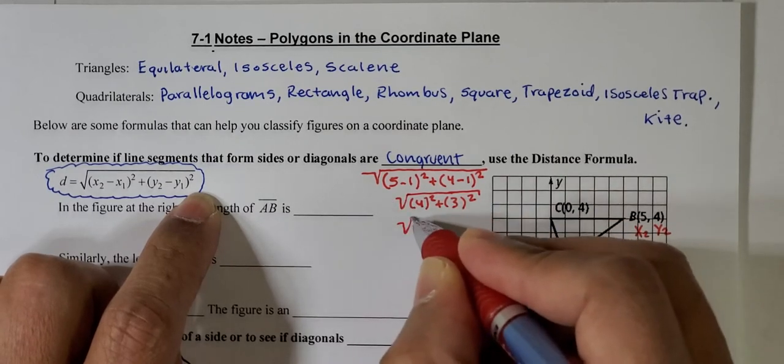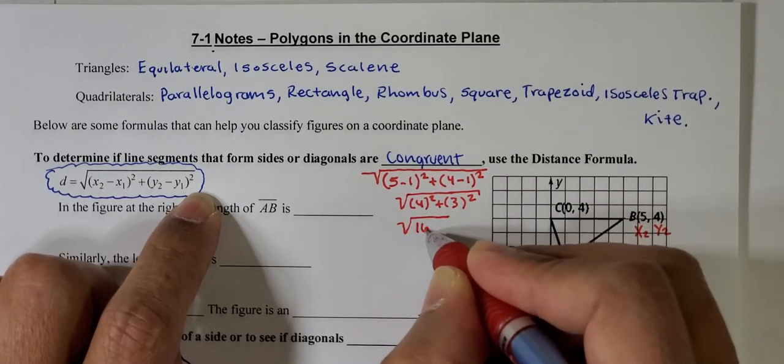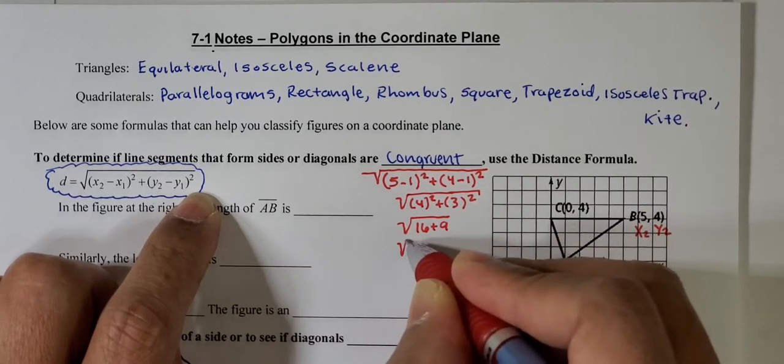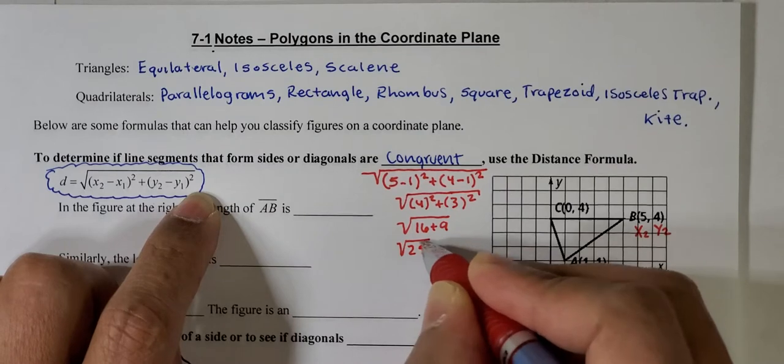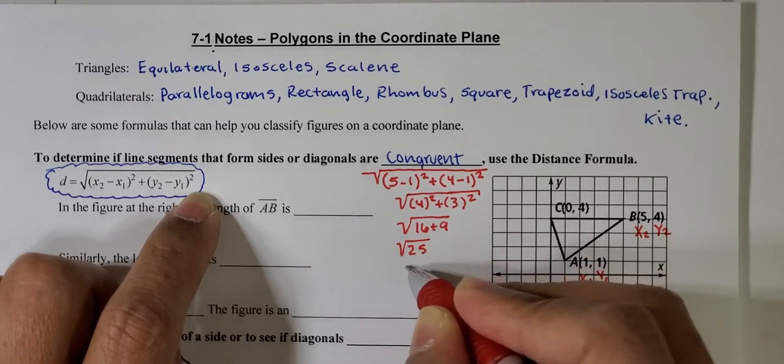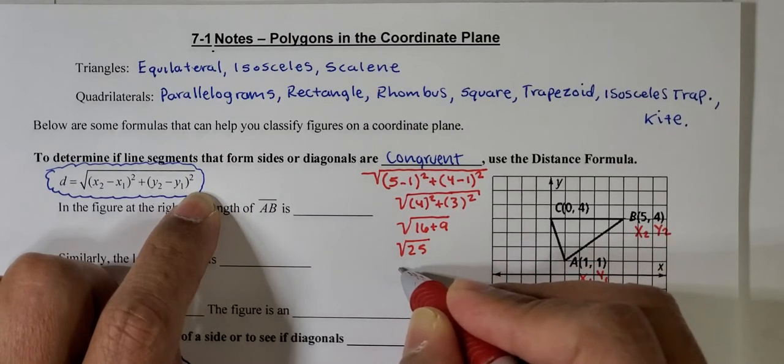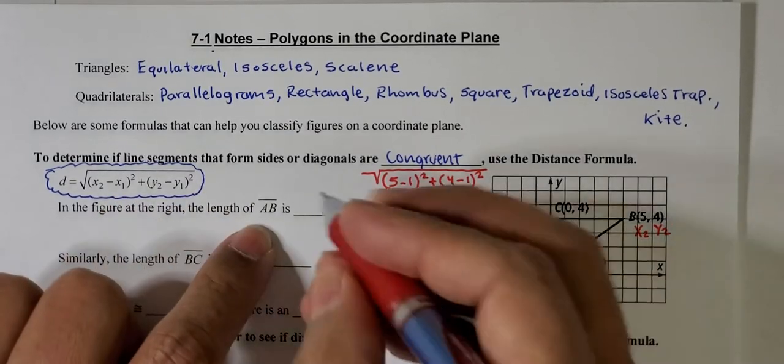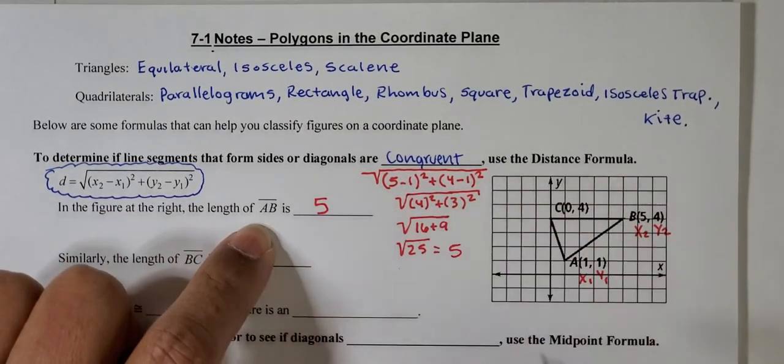We know that 4 squared is 16, plus 3 squared, that's 9, and this is the square root of 25, but we know this is a perfect square, so that means this is equal to 5. So the length of AB is 5 units.